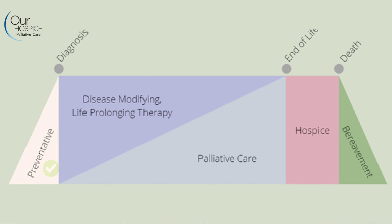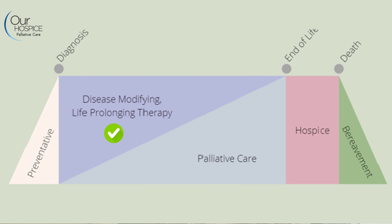When a patient does get diagnosed with a terminal or life-limiting illness like heart failure, COPD, or cancer, they get started on mostly what we call disease-modifying or life-prolonging therapies. These would be inhalers for COPD, or if it's cancer, maybe surgery, radiation, or chemotherapy. That's where we start.